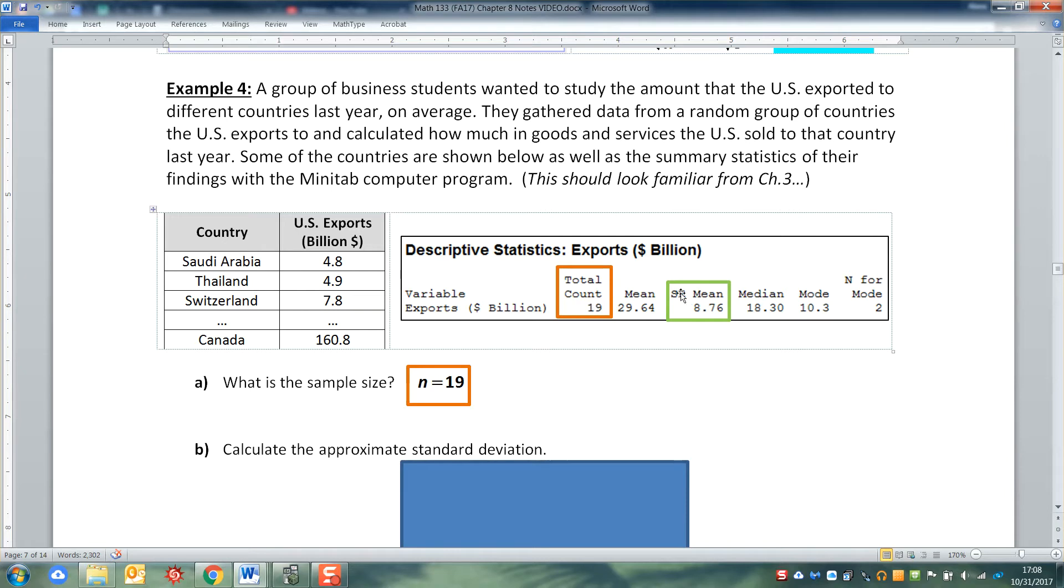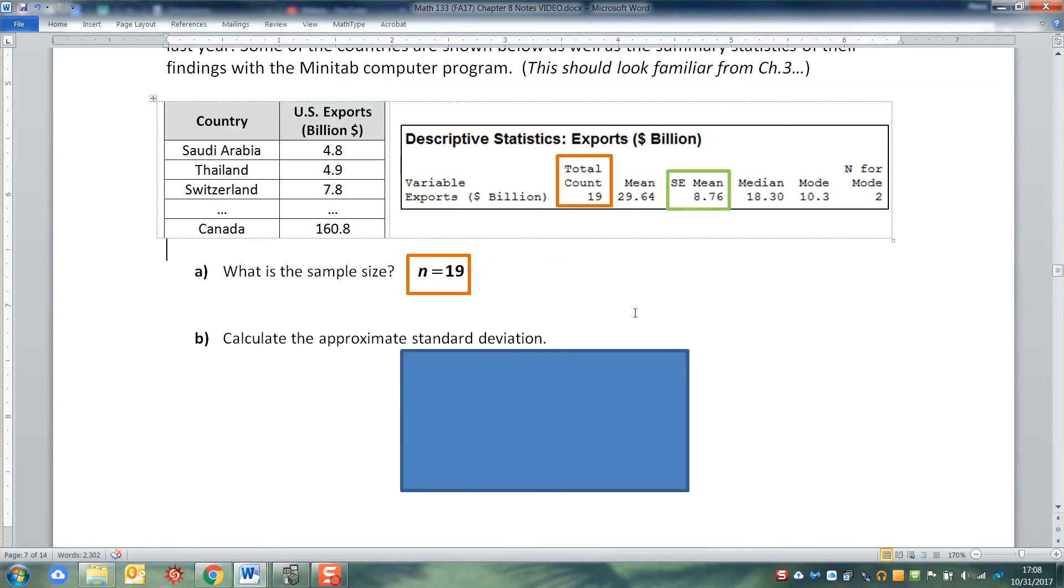And then particularly intriguing is the bit in this little green box right here, it's called the standard error of the mean. But standard error has a formula that is S over the square root of N. Well, it's technically sigma over the square root of N, but we don't have sigma given to us because this is not a population, this is a sample. So we have to use S over the square root of N. But I know the N part, it's 19, and I know the standard error is 8.76. So I could set the equation equal to 8.76.